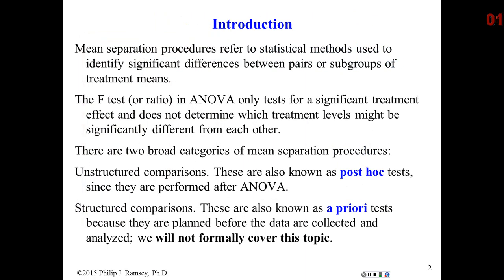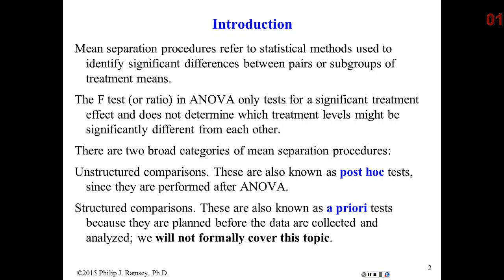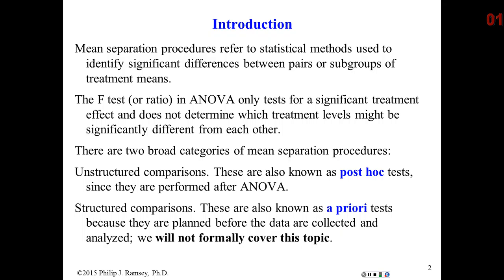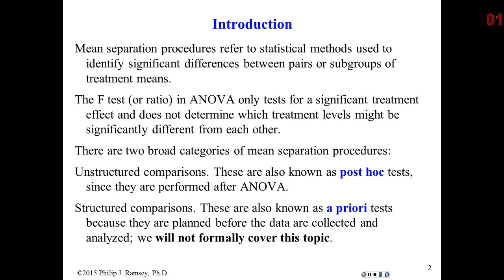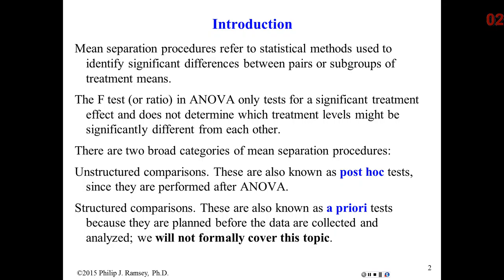I want to explain what we mean by multiple comparisons. Recall we studied ANOVA — we only limited ourselves to the one-factor case, but the concepts hold even for larger experiments. In ANOVA, we do an overall F-test to determine if the experimental factor is potentially significant, meaning it has a real impact on the response. Remember that our factor has multiple levels, so saying there is a significant effect — for instance, the meat packaging method — only says that some of the levels of that factor are different. ANOVA by itself does not tell you which levels are different.